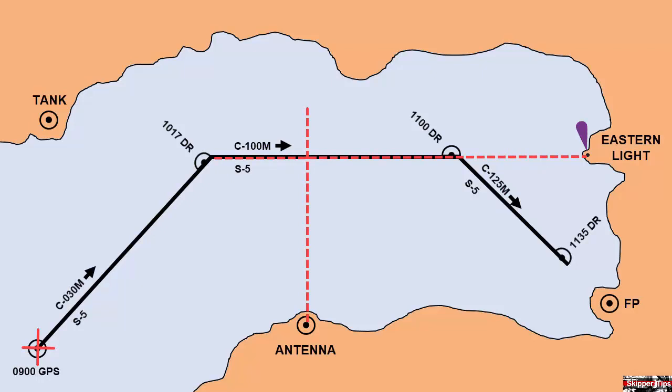On the third leg, notice how eastern light has now become a beam bearing to show our advance along the track. Ahead of our bow, we see a flagpole. We can take bearings to the flagpole to show whether we are right or left of our track line, and that way we can compensate for the wind or current that has set us off track.